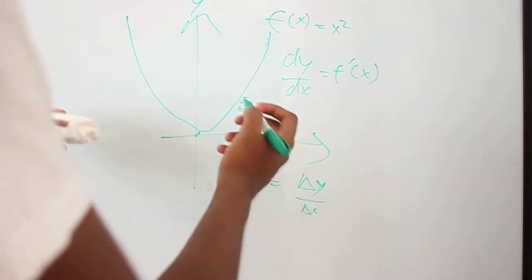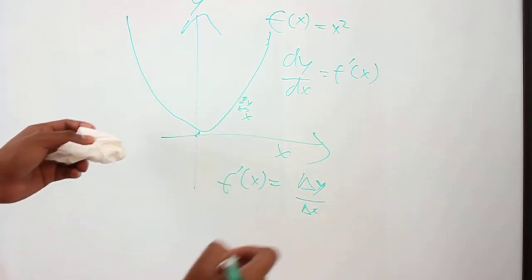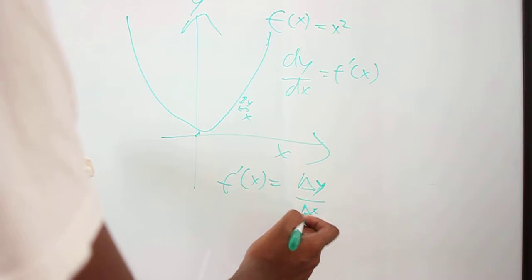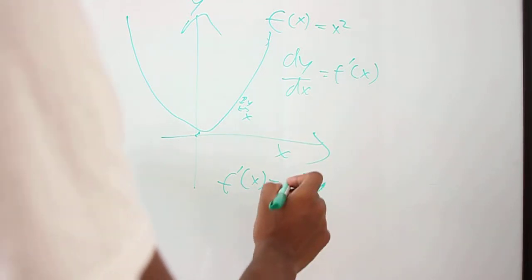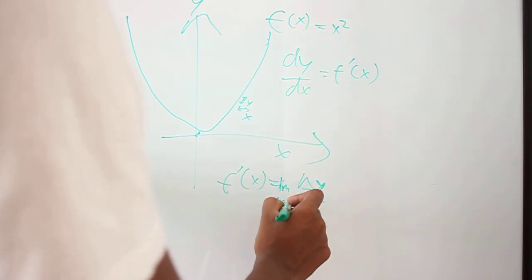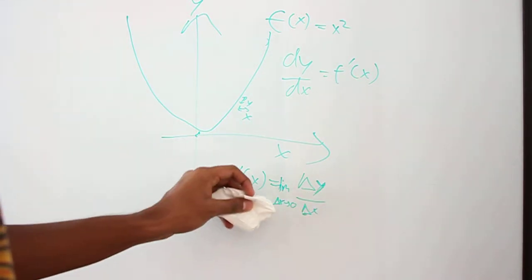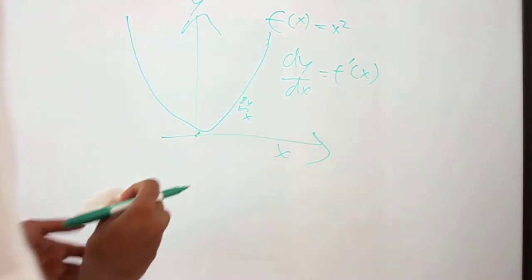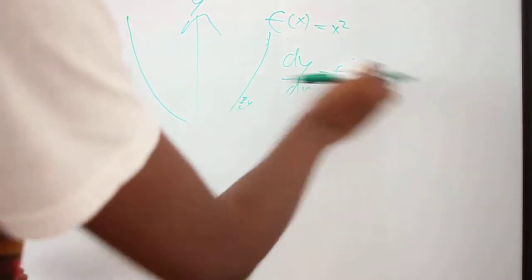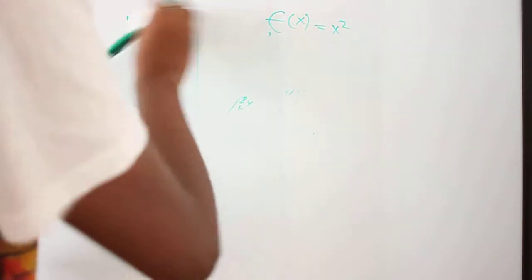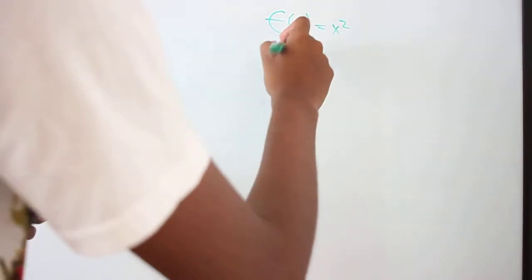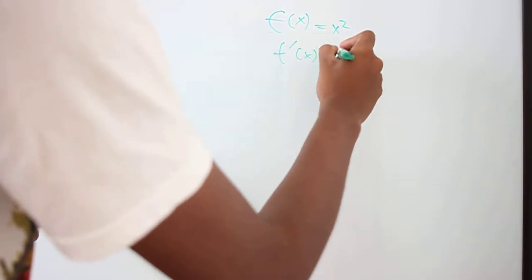And what we actually mean by the rate of change of the whole function is what happens when you make this change in x, delta x, really, really small. So you try to limit such that delta x approaches zero. So what actually happens when delta x approaches zero? And in this case, we're going to try and derive the derivative of x squared, which you should know is actually 2x.